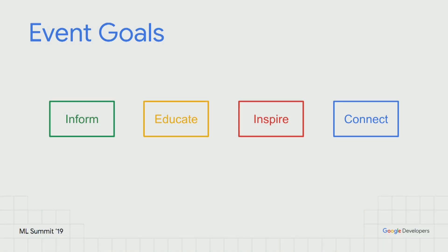Our goals for today are to inform you on what's happening in the industry, educate you on other ways that you might not have experienced yet with machine learning or artificial intelligence, inspire you to create and build new things with machine learning and artificial intelligence, as well as to connect and network with each other. Many of you here have never met the person you're sitting next to, so allowing this opportunity to network and meet others in other industries and verticals is another goal for our event today.